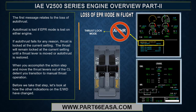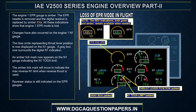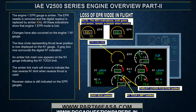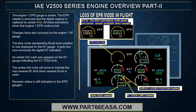The engine 1 EPR gauge is amber, the EPR needle is removed, and the digital readout is replaced by amber Xs — all indicating that engine 1 EPR mode is lost. Changes have also occurred on the engine 1 N1 gauge: the blue circle representing thrust lever position is now displayed on the N1 gauge, a grey box surrounds the digital N1 indication, and an amber tick mark appears on the N1 gauge indicating the N1 TOGA limit.